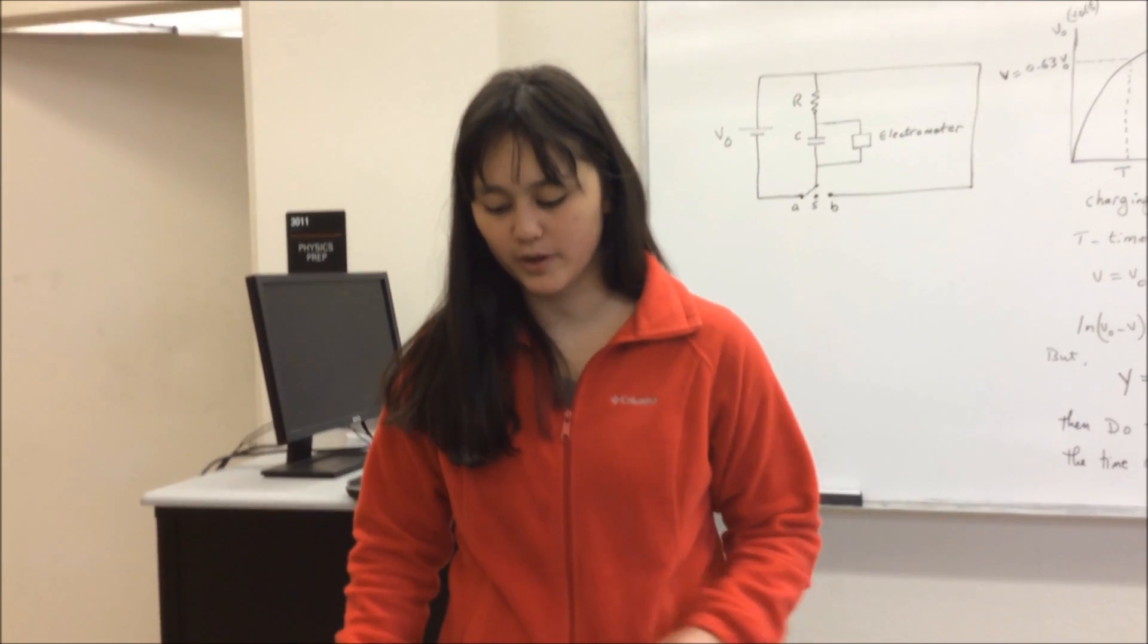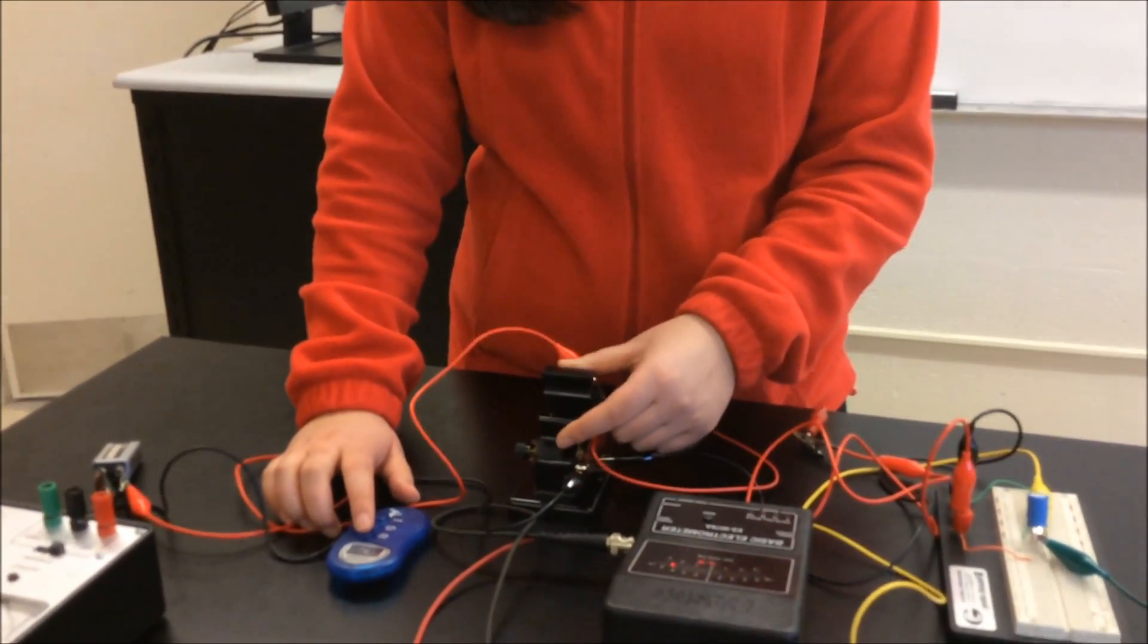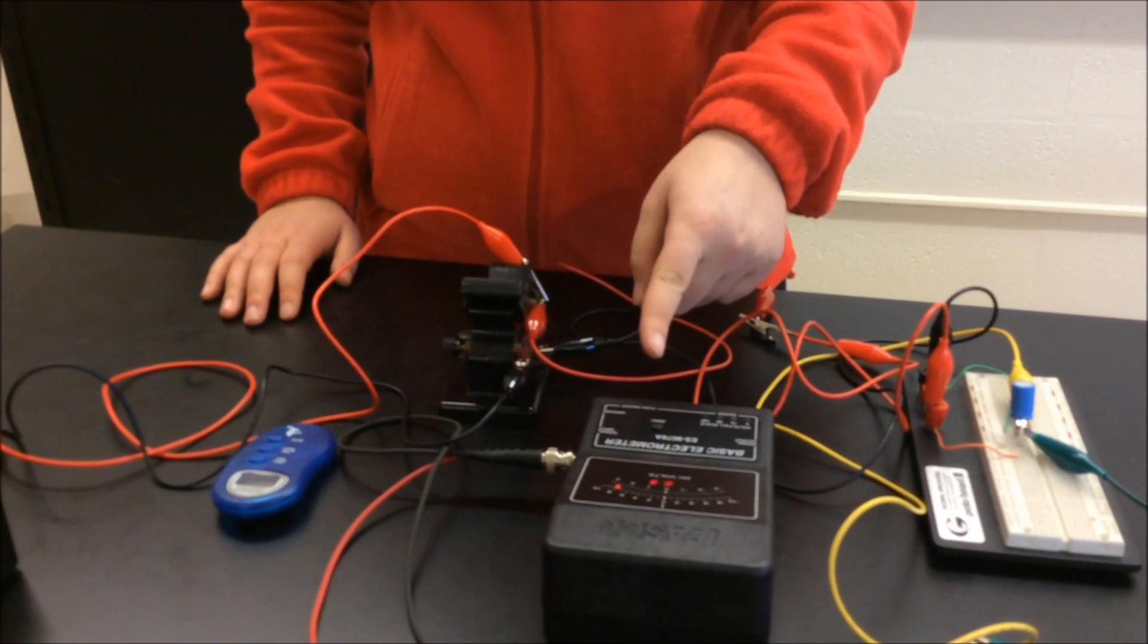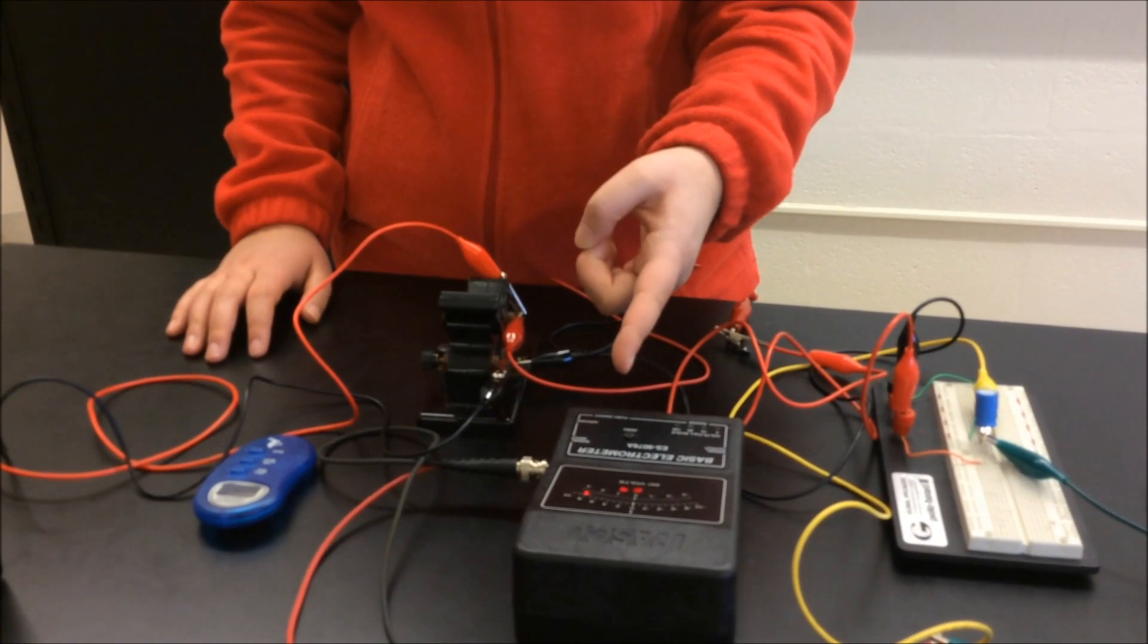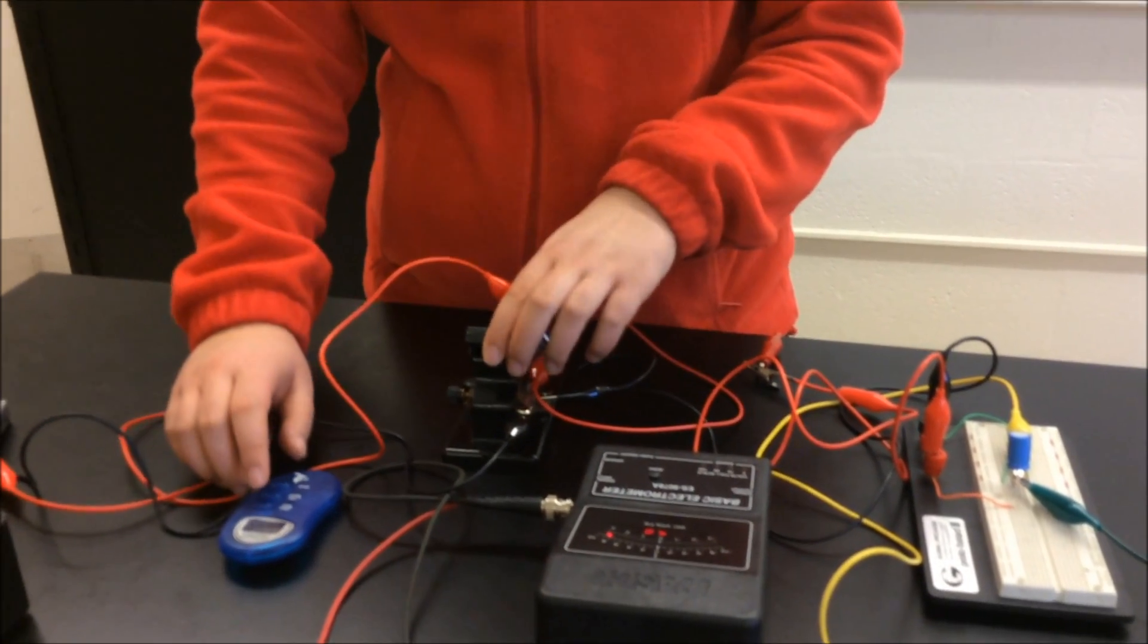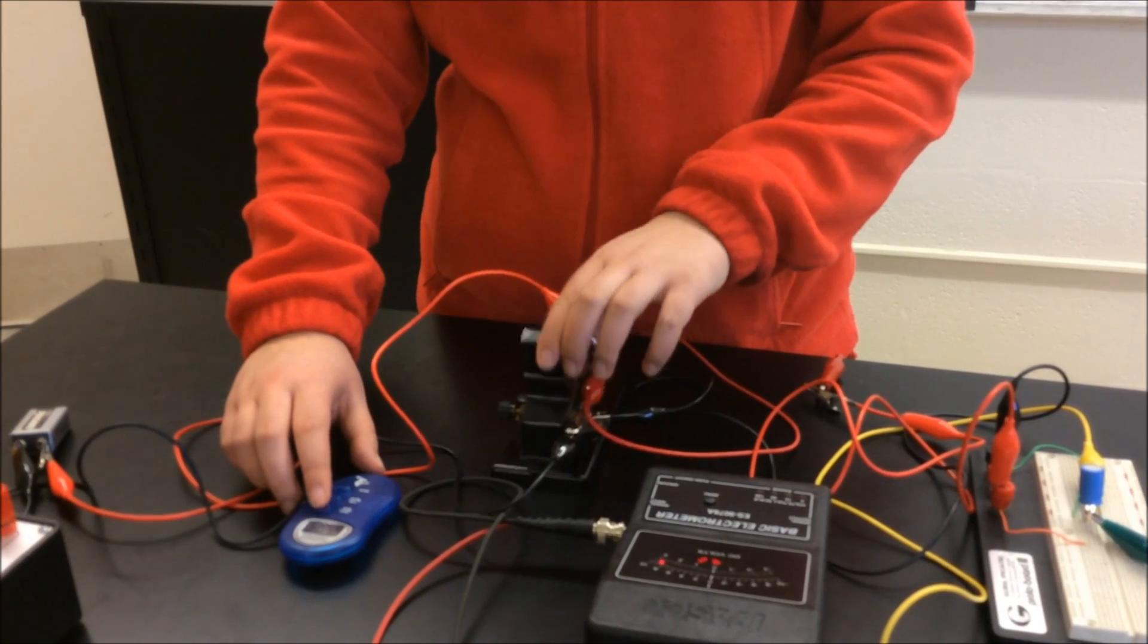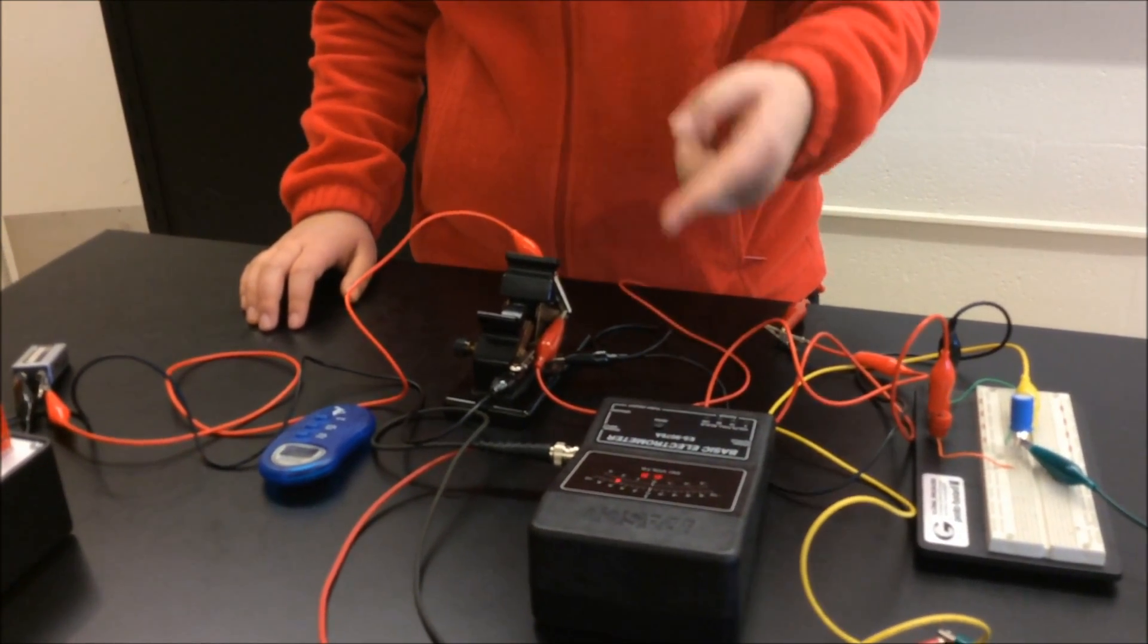So what you want to do is you want to flip the switch, and you're going to start the stopwatch at the same time, and you're going to see how the voltage changes, and every four seconds you're going to record the new voltage. When you see that it reaches the maximum voltage, you're going to stop your stopwatch, reset it, and then flip the switch the opposite direction, and then measure again every four seconds the decreasing voltage.